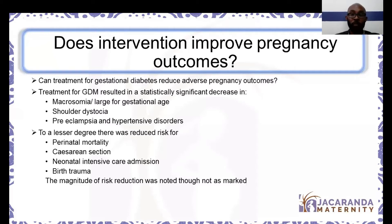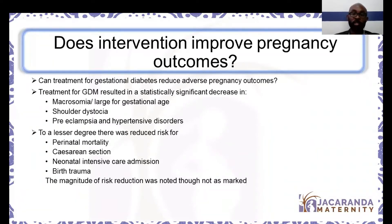Pre-eclampsia and hypertensive disorders are greatly reduced when we treat GDM. Additionally, the cesarean section rate goes down, perinatal mortality — the mortality of either the mother or the baby — goes down when you treat GDM versus when you don't, and birth trauma goes down. There is definitely value in identifying and treating these patients to reduce overall complications.